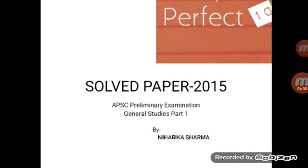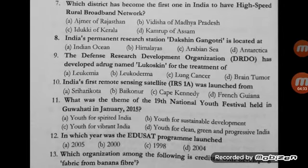Question number 7: which district has become the first in India to have high-speed rural broadband networks? Options: Ajmer of Rajasthan, Vidisha of Madhya Pradesh, Idukki of Kerala, Kamrup of Assam. The correct option is C — Idukki of Kerala. This district was announced as the high-speed rural broadband network district by IT Minister Ravi Shankar Prasad.